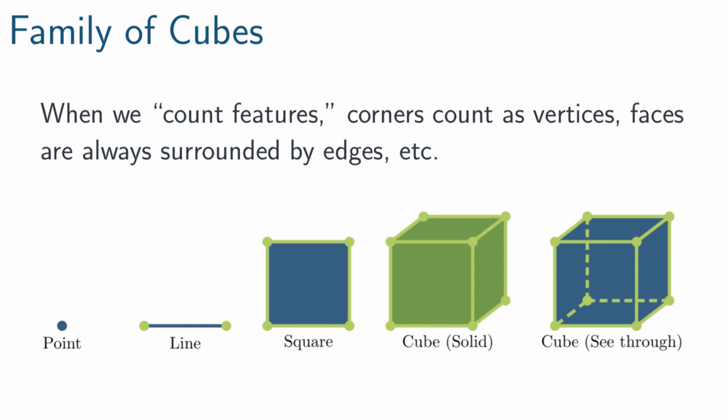The rules of the game today say that when we count the features of these shapes, the corners will count as vertices and the 2D faces will always be surrounded by edges. This is a combinatorial exercise, so we're going to count all of those parts as vertices, edges, and faces.